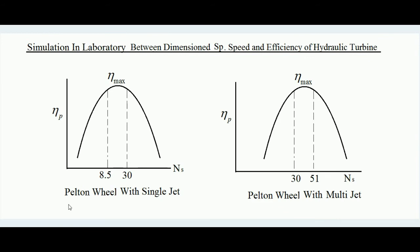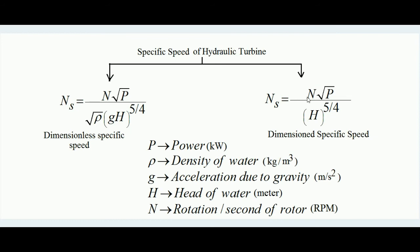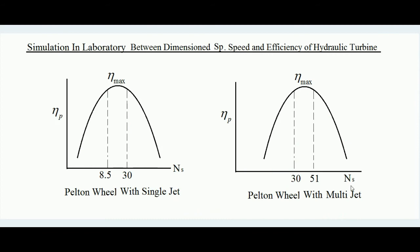In the laboratory, it is found that in which specific speed range the particular type of turbine is most efficient. For the Pelton wheel with single jet, it is found that when the specific speed is between 8.5 to 30, it has maximum efficiency. Similarly, a small model of the Pelton wheel with multi-jet (having many nozzles) is tested, and it is found that the Pelton wheel with multi-jet is most efficient in the specific speed range of 30 to 51.